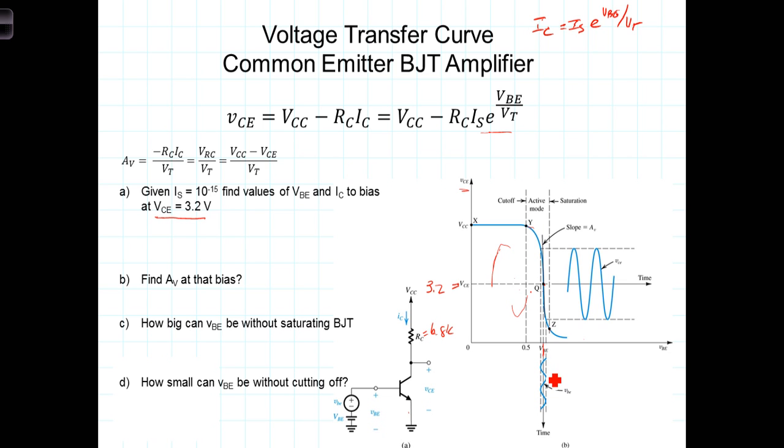For this bias point, we can calculate I sub C. I sub C is just the voltage drop across the resistor, which is VCC minus the bias VCE, which is 3.2, divided by the resistance, or 6.8 k. We get that this transistor is biased with an I sub C equal to 1 milliamp.